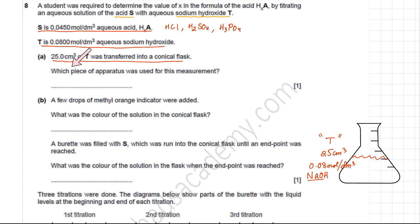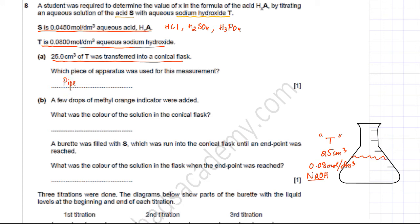The first part asks which piece of apparatus was used to transfer 25 cm³ of T. The best apparatus for transferring liquids, especially 25 cm³, is a pipette, because a normal pipette has only one mark — the 25 cm³ mark — and it is very accurate for transferring liquids from one container to another.